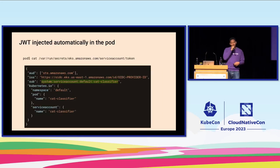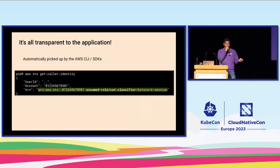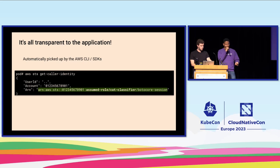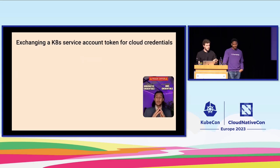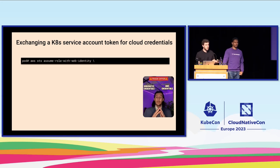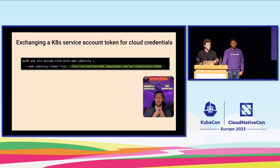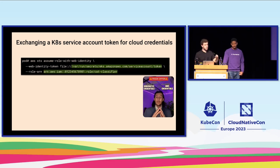Even if you try validating by exec-ing into the pod and interacting with AWS to authenticate, you'll see the specific role for cat-classifier. The underlying mechanism is exchanging your Kubernetes credentials to get AWS credentials, using the AWS STS assume-role-with-web-identity API — basically: give me credentials for this role and I'm providing a JSON web token. The JWT is signed by your Kubernetes cluster, and if the role trust policy allows the right pod, it gives you back AWS credentials. It's really a matter of exchanging Kubernetes credentials and getting back cloud credentials.